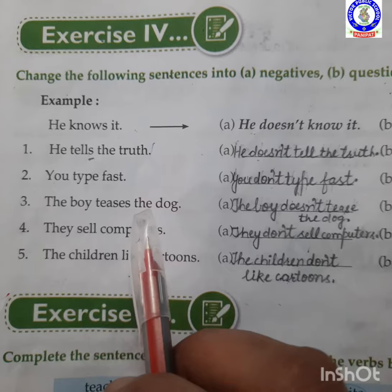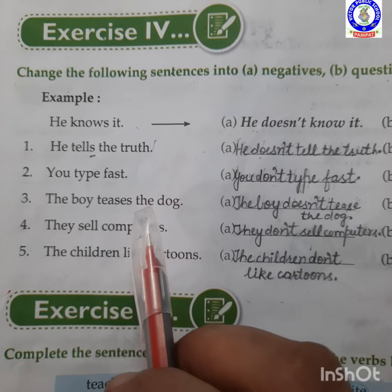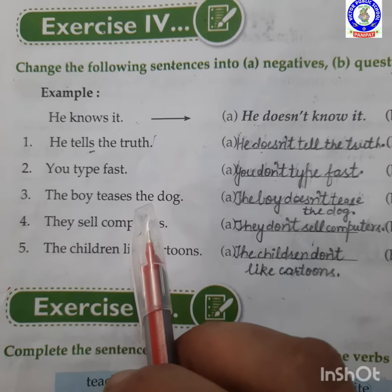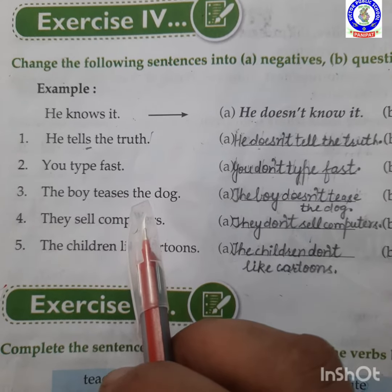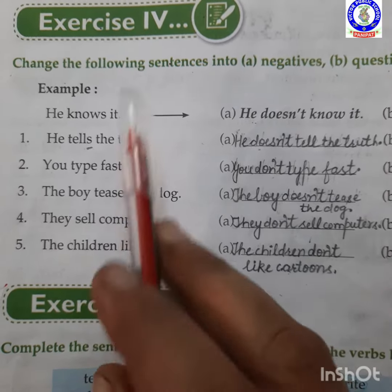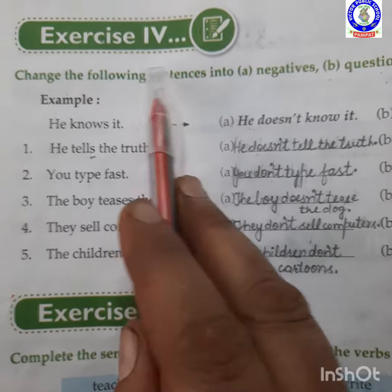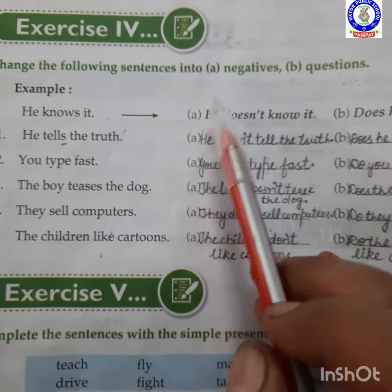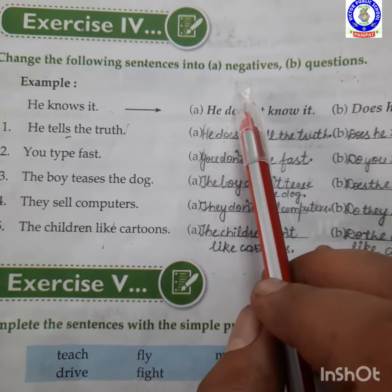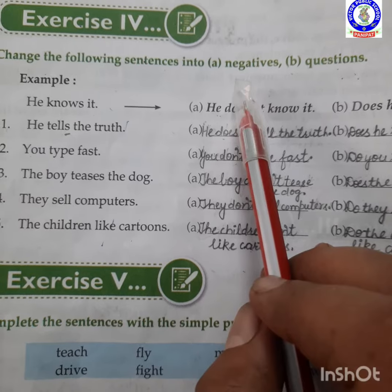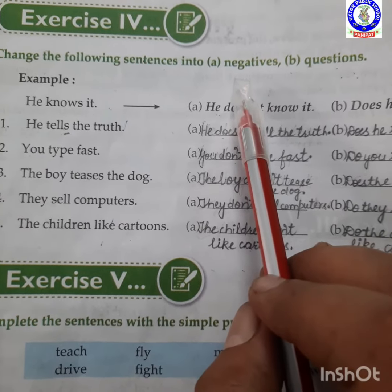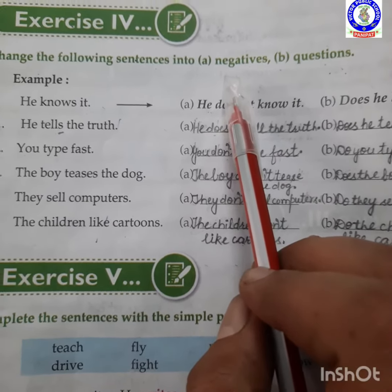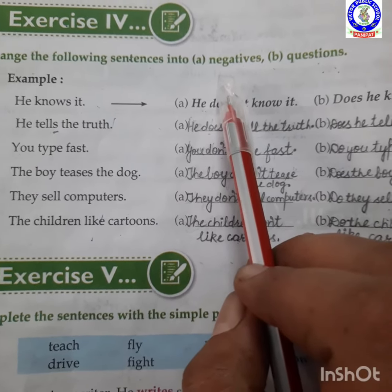Good morning, my dear students. I am Aman, your English teacher. Today we will revise exercise fourth. In this exercise, we will learn negative sentence. Negative sentence means nakar atmak vaakye — nahi wale vaakye.